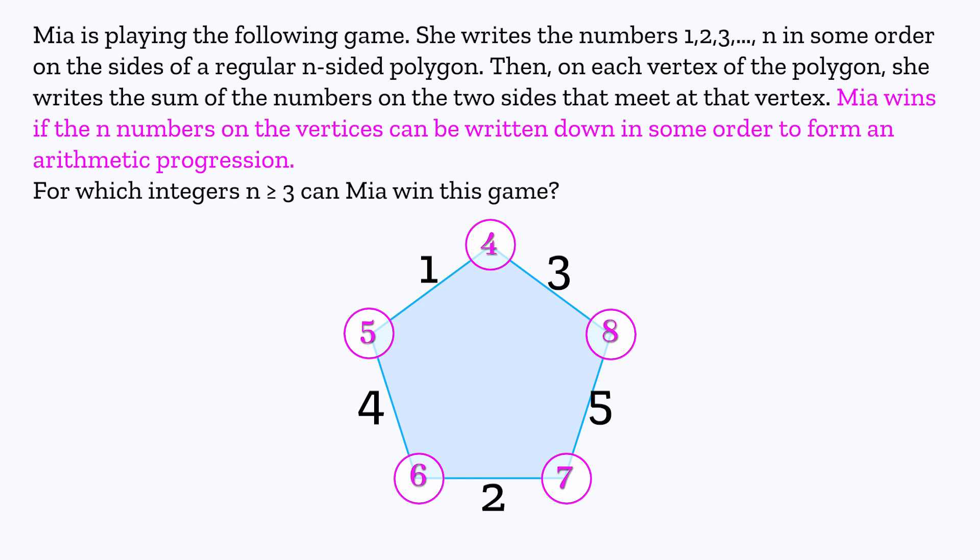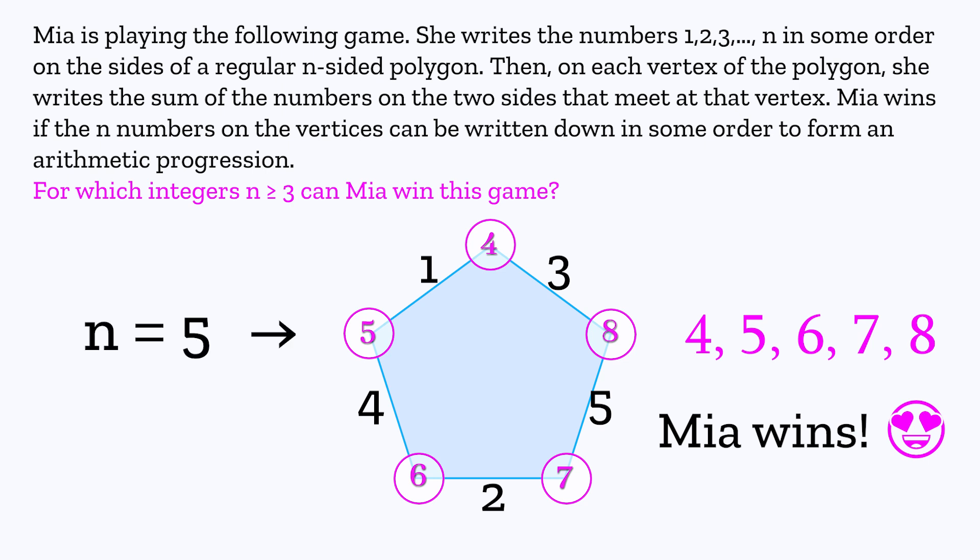Mia wins if the n numbers on the vertices can be written down in some order to form an arithmetic progression. For which integers n ≥ 3 can Mia win this game? So as we've shown, when n equals 5, she can win the game because 4, 5, 6, 7, 8 do form an arithmetic progression. Remember that means they go up or down by a consistent amount.